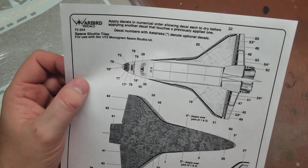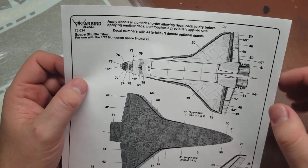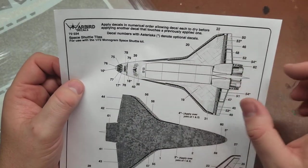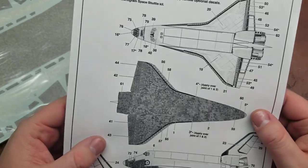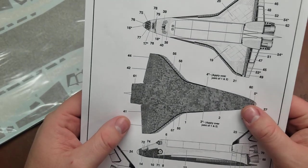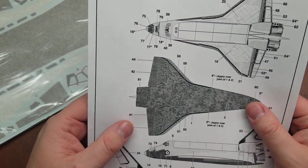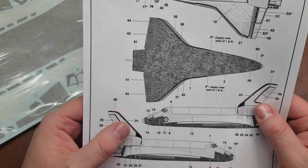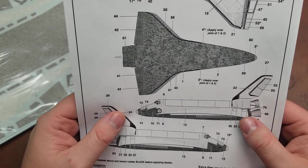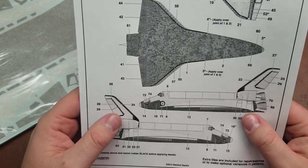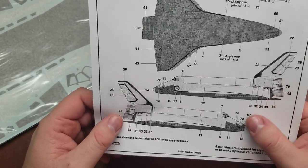Reviewing, we have top surface tiles, wing tiles, and then a nice speckly pattern for the bottom which trying to mask and do this could be done but would be an absolute nightmare.